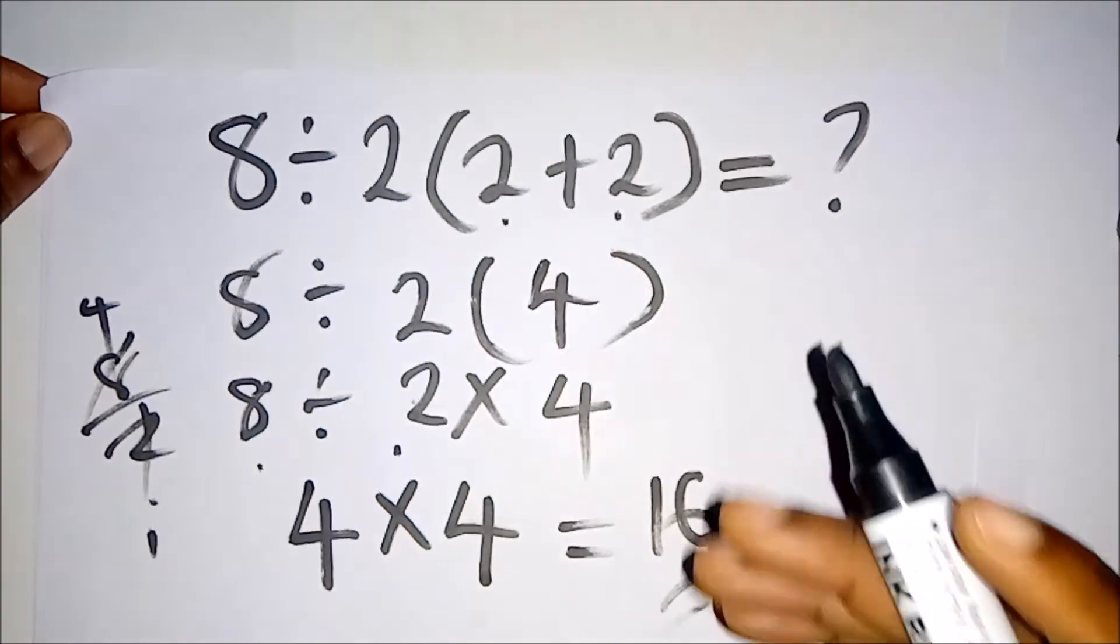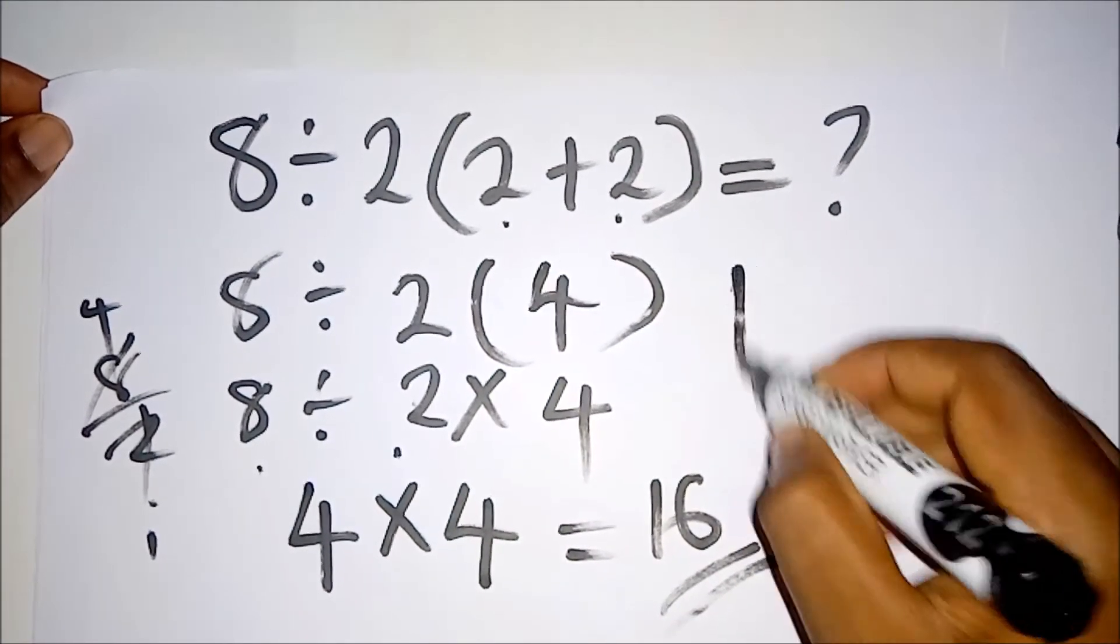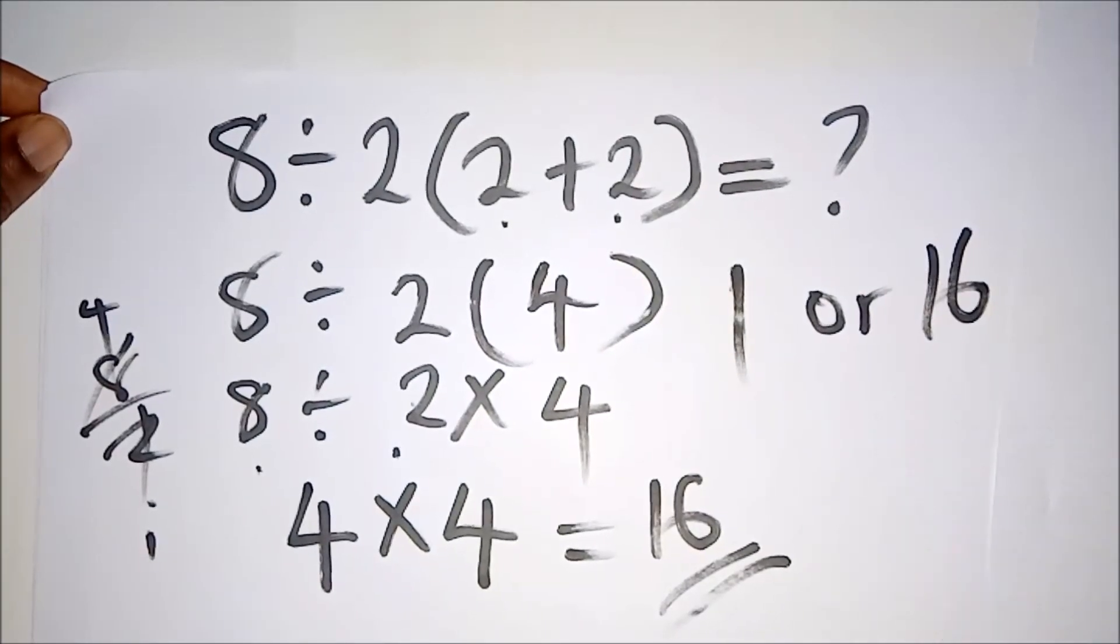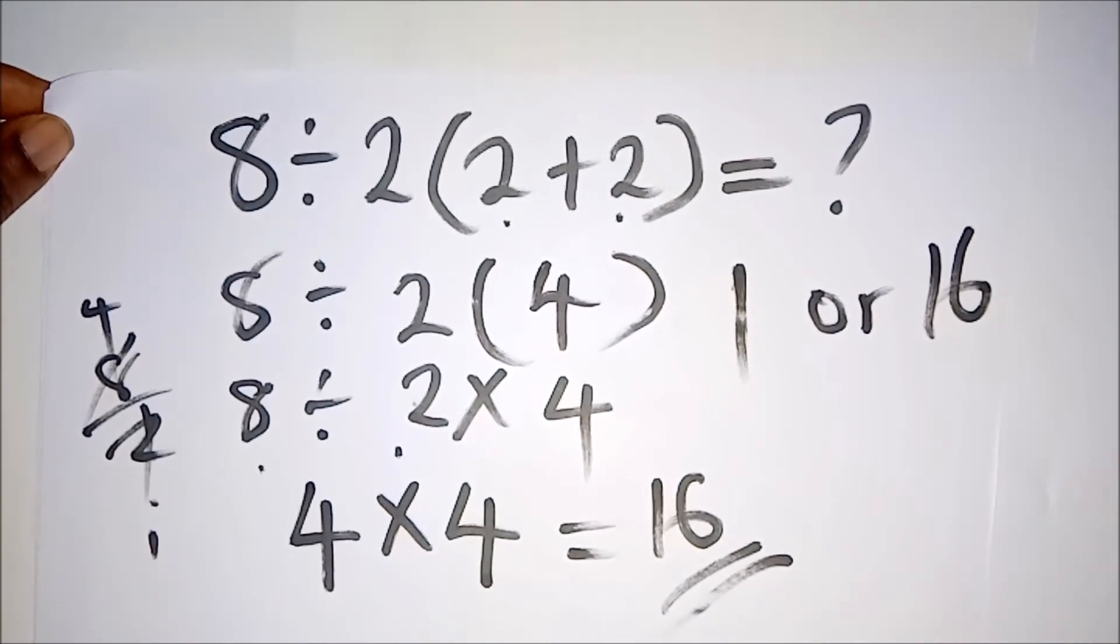So the African solution to this is 16. There's been a debate - the answer is either 1, some people were getting 1, while others were getting 16. But for the African continent, our answer is 16.